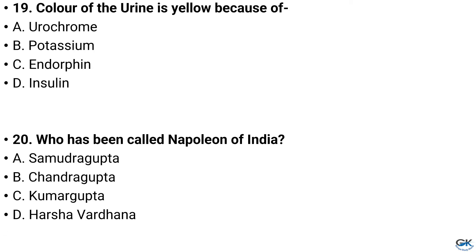Question number 19. Color of the urine is yellow because of — Option A: Urochrome, Option B: Potassium, Option C: Endorphin, Option D: Insulin. And the answer is Option A: Urochrome.